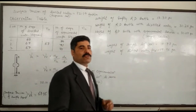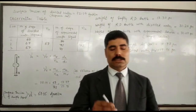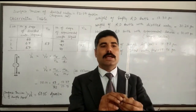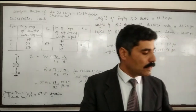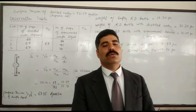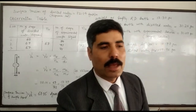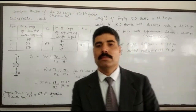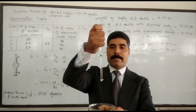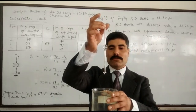Now the number of drops are calculated with the help of the stalagmometer. This is the stalagmometer with the upper mark A and lower mark B. The liquid is allowed to fall from mark A to mark B, and we count the number of drops very carefully.